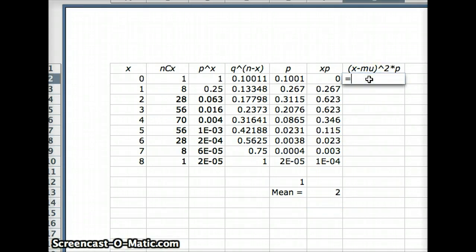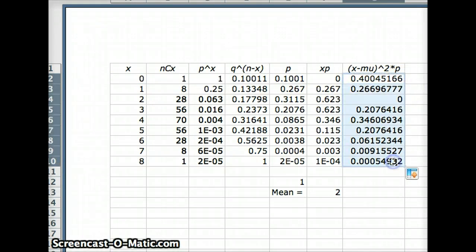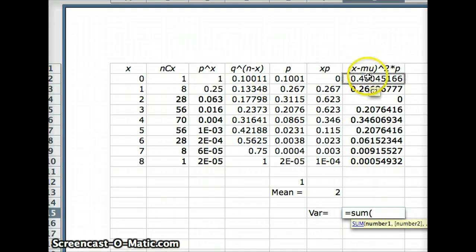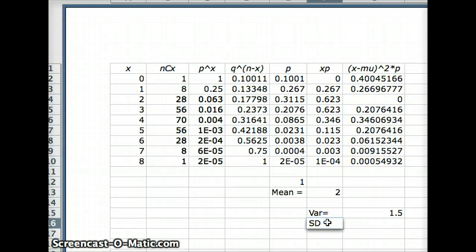Now to get the variance, we're going to need (x minus mu) squared times p. The x value here, minus the mu value which is 2, squared times p. And we will autofill this down. And the variance is the sum of all those. So the variance equals the sum of the (x minus mu) squared times p. If we sum all those up, we get 1.5. And the standard deviation is the square root of that, which equals the square root of that number, and we get 1.2247.